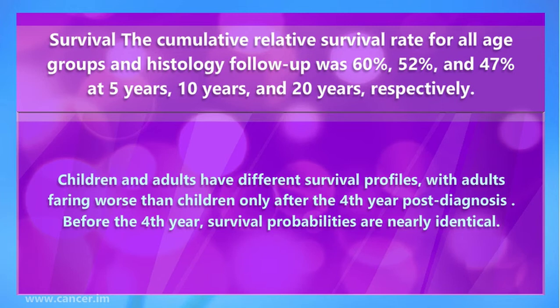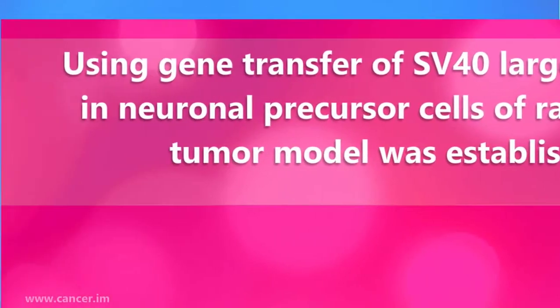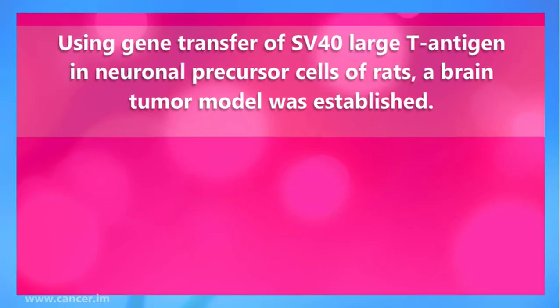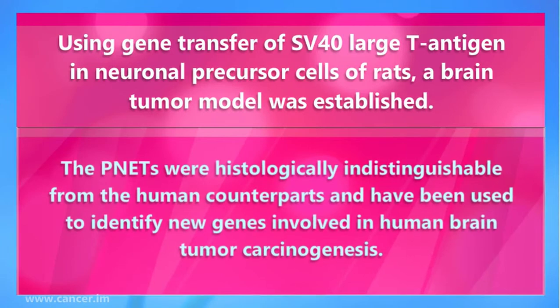Children and adults have different survival profiles, with adults faring worse than children only after the fourth year post-diagnosis; before the fourth year, survival probabilities are nearly identical. Using gene transfer of SV40 large T antigen in neuronal precursor cells of rats, a brain tumor model was established. The tumors were histologically indistinguishable from human counterparts and have been used to identify new genes involved in human brain tumor carcinogenesis.